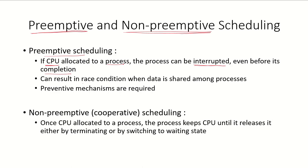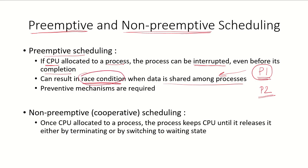Preemptive scheduling can result in a race condition when data is shared among processes. Suppose process P1 was running and updating some data shared with process P2. If the CPU is taken away from P1 while it is updating that data, the data being used by P2 will not be in a consistent state. To prevent this kind of race condition, we have to use preventive mechanisms, which will be discussed in later videos.